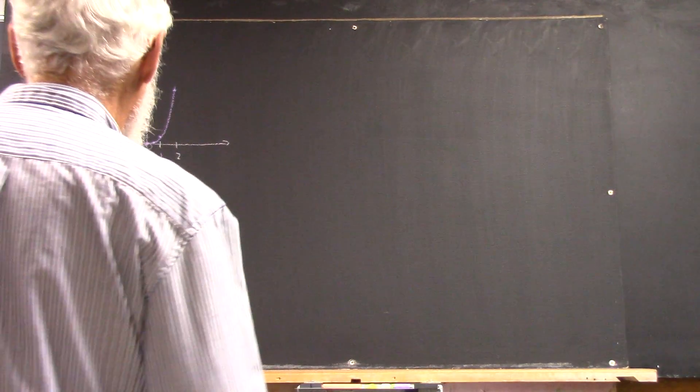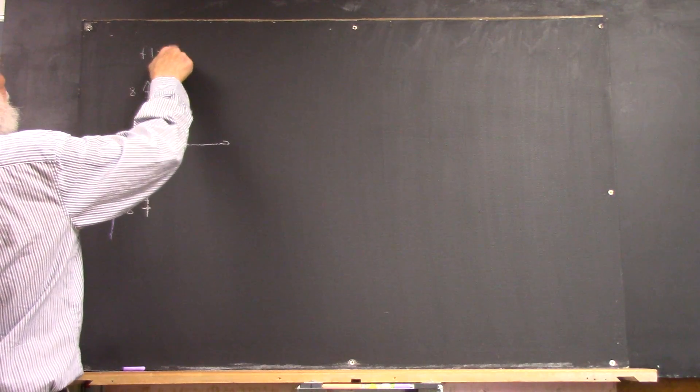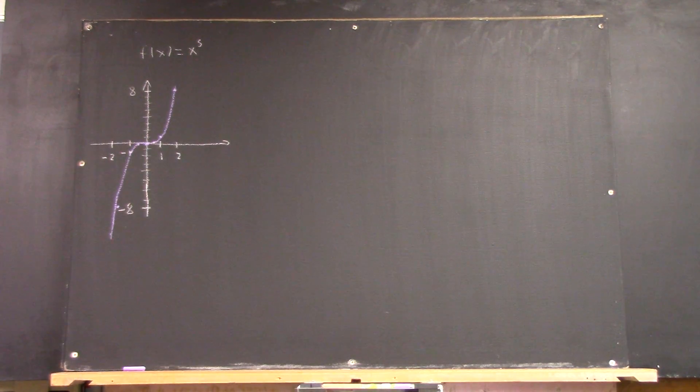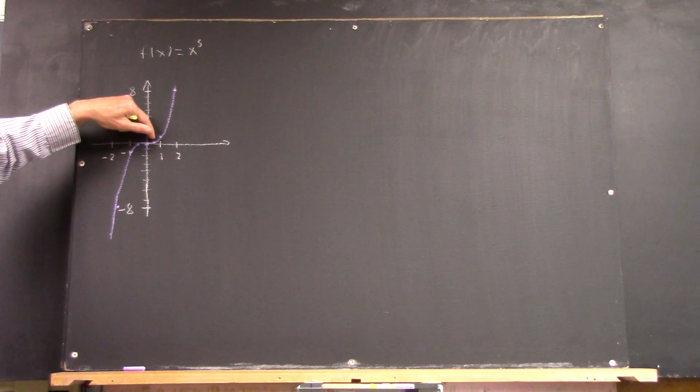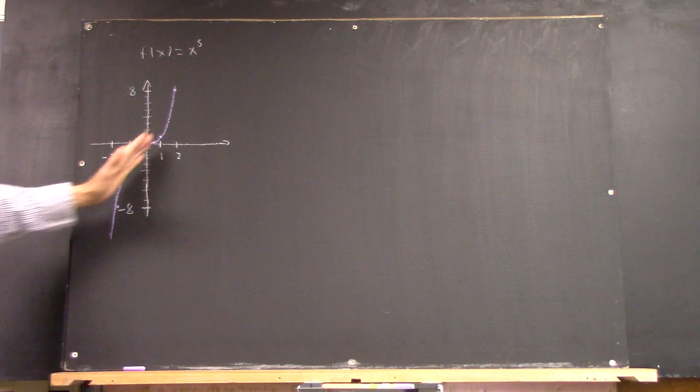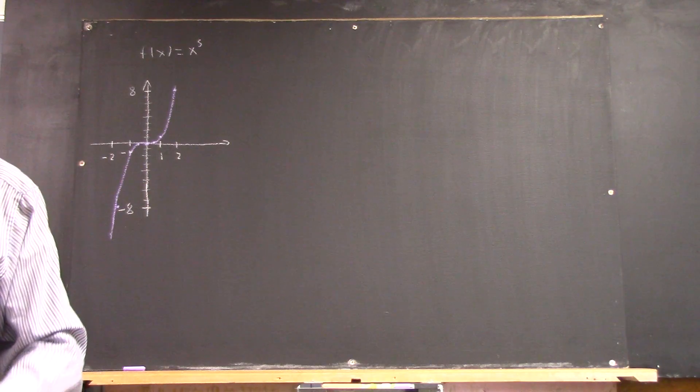Okay, the first problem gives you the f of x equals x cubed function and says make a graph. Now I haven't gone through the details of making this graph because everybody knows how to make that table and everybody knows how to make the graph. Just be sure you include negative one-half and one-half so you see how flat the graph gets here, because that affects the shape of the graph in a way that's going to affect the accuracy of your estimates.